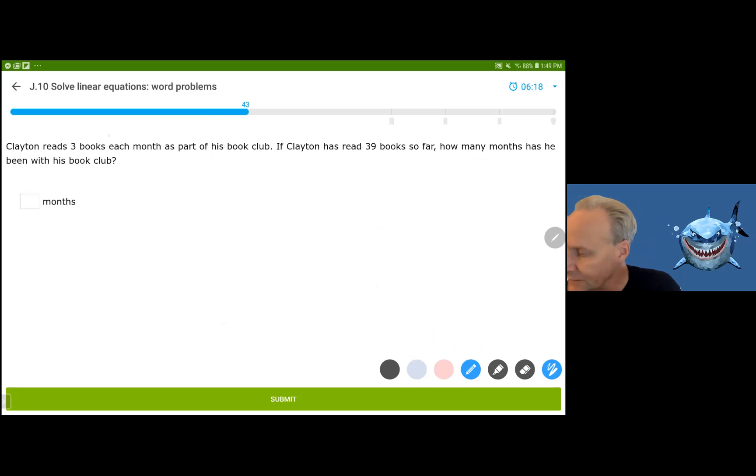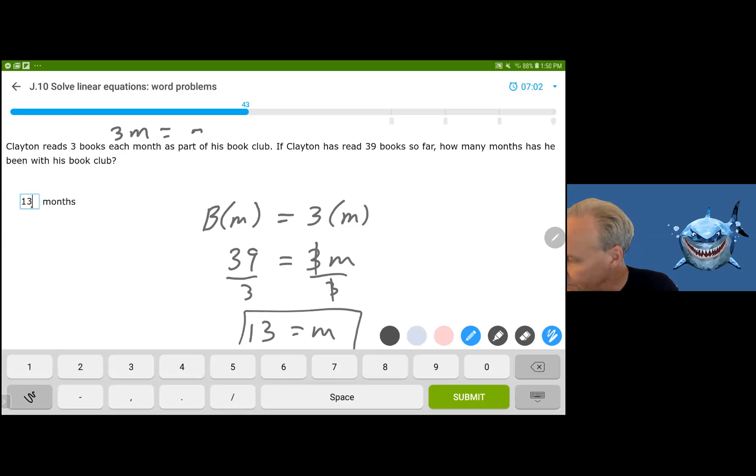Clayton reads three books each month. This represents the number of books over months. So the books after a certain number of months is equal to the number of books he reads each month. If Clayton has read 39 books so far, it's 39 books. And we want to know how many months have gone by. Well, if he reads three books each month, there are 13 months that have gone by. Assuming he's reading three each month.